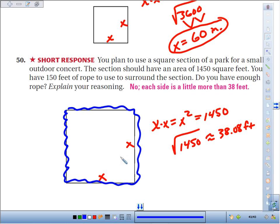You've got four sides that are x each, four sides that were 38.08 feet each. So if I times that by four sides, you get about 152.32 feet is all the way around your little square section. You've got 150 feet of rope.